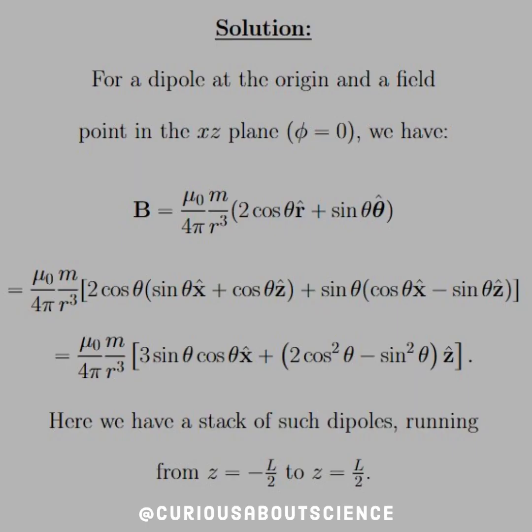Alright, so for our solution for the dipole at the origin and a field point in the xy plane - we have phi equals zero. So when we expand the magnetic field of a dipole, we need to plug in the fact that r hat and theta hat have components. So we'll plug them in and factor them into x and z as such. We factor it down and simplify. Again, I got those from the back of the book.